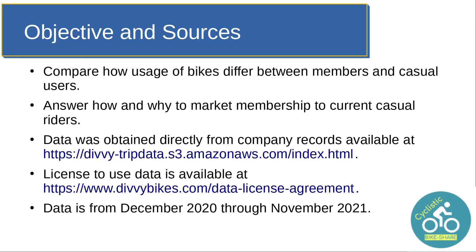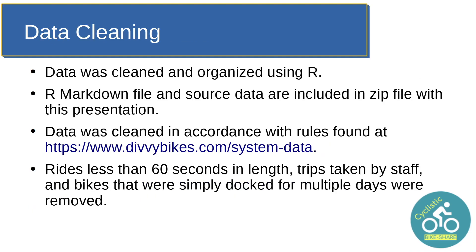The object of the course is to compare how the usage of bikes differ between members and casual users. This is based off of real data from Divvy by Lyft in Chicago. We want to answer the question about how and why to market annual memberships to current casual riders. You can see the links to the data and the license at the hyperlinks below. The data is from December 2020 through November 2021. If you'd like a copy of the data I used, you can find that on the portfolio site. The presentation will also be included in the zip file.